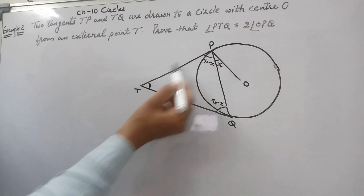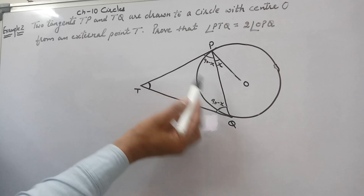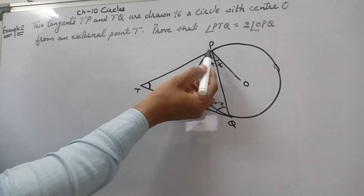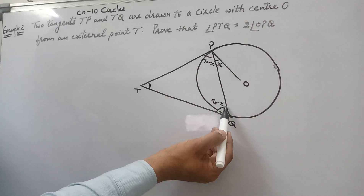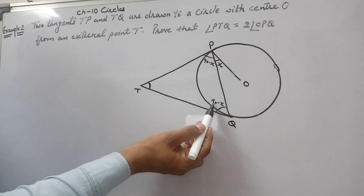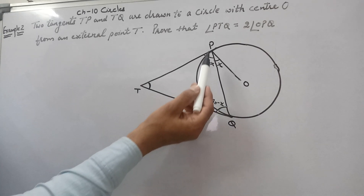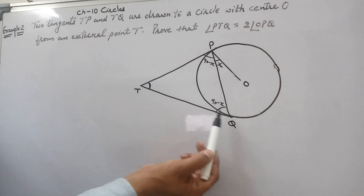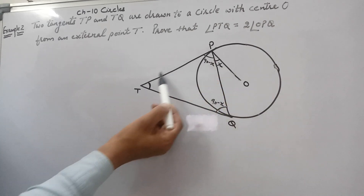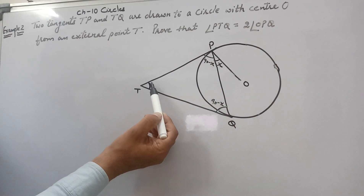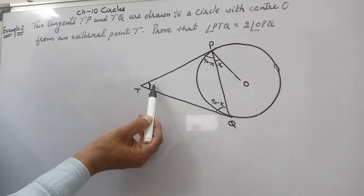Since triangle PTQ is isosceles with TP equal to TQ, the angles opposite the equal sides are also equal. So angle TPQ equals angle TQP, meaning both are 90 minus x. Applying the angle sum property in triangle PTQ, we get angle T equals 2x. This proves that angle PTQ is double of angle OPQ.